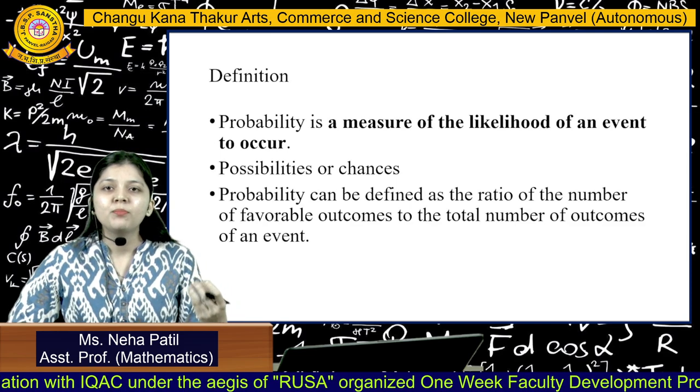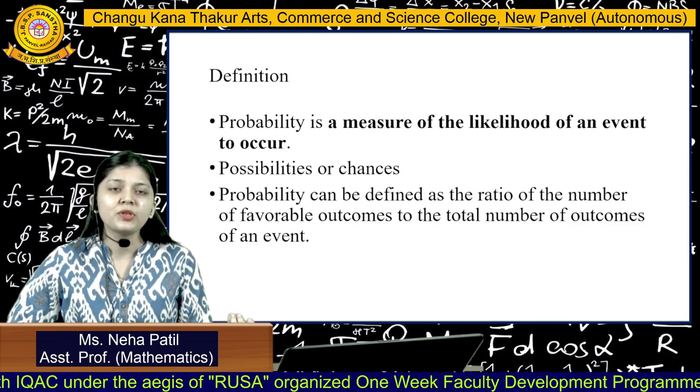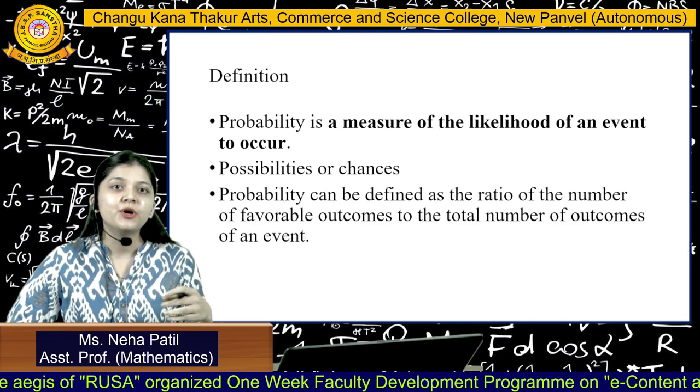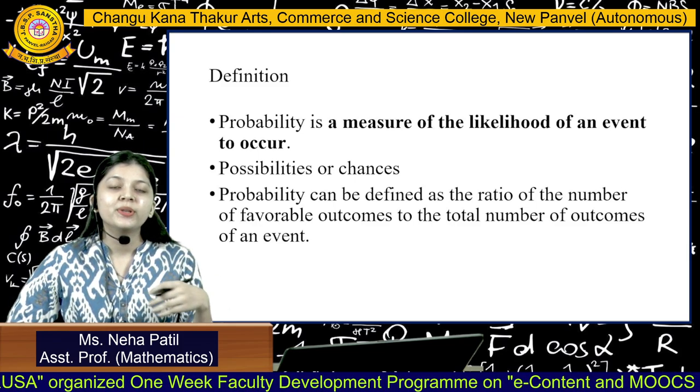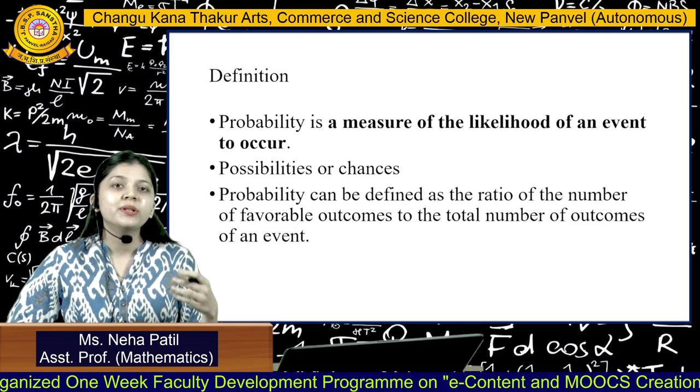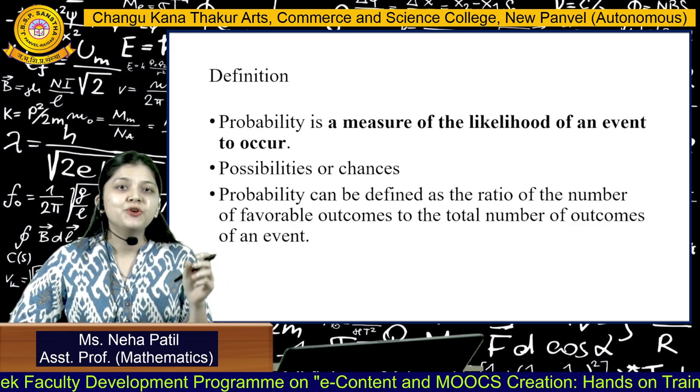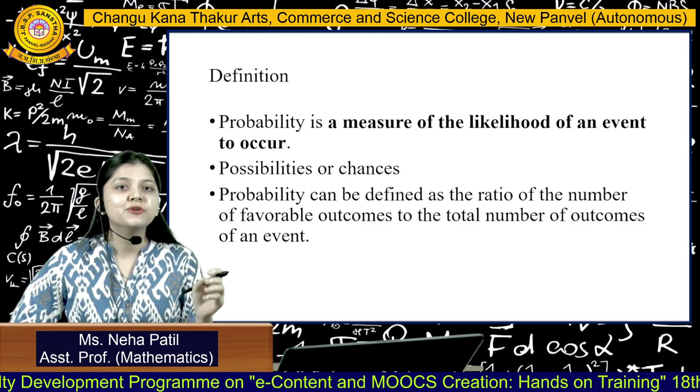For example, when we are talking about the weather by looking at the sky, that is by making a judgment or with observation, we can say whether it is going to be raining outside or whether it is going to be sunny outside. Your judgment and observation is probability in simple words.